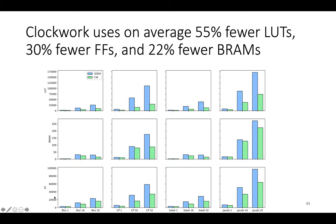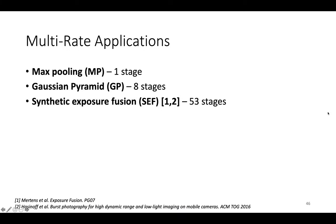Each row represents a resource: the bottom row is flip-flops, the middle row is BRAMs, and the top row is lookup tables. Clockwork's resource utilization is better overall, and as throughputs increase, the relative advantage over SODA becomes even greater.